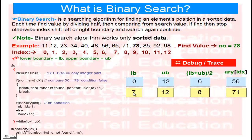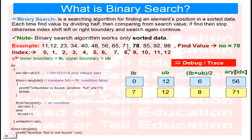Now lower boundary is 7 and upper boundary is still 12. Lower boundary plus upper boundary = 19, divided by 2 = 9.5 — but we take only the integer part, so IDX = 8. According to our array, the value at index 8 is 71.